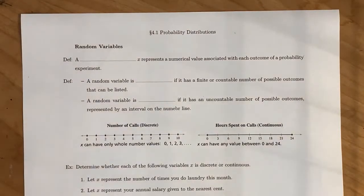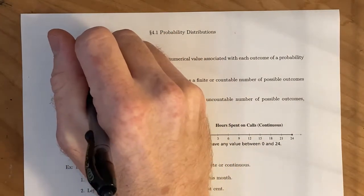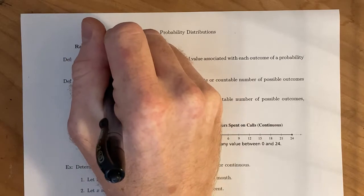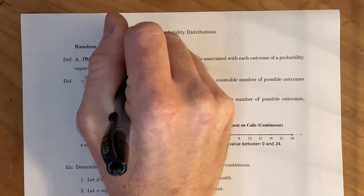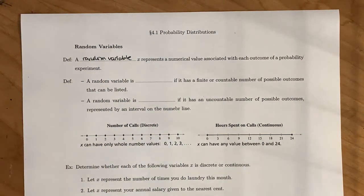In chapter 4 we're going to talk about probability distributions and random variables. Random variables are fairly important to our study of probability experiments. So to begin, a random variable x represents a numerical value associated with each outcome of a probability experiment.